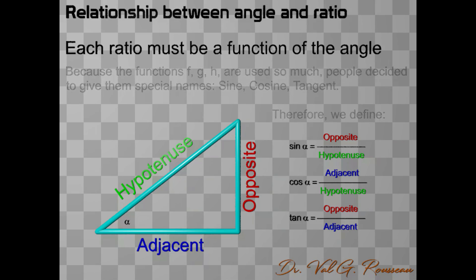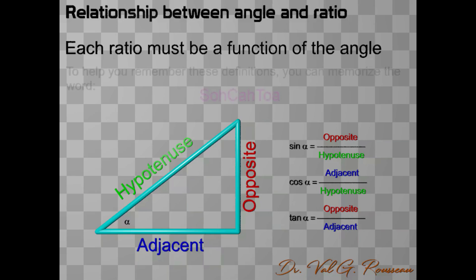You can easily remember these definitions by memorizing the word SOHCAHTOA. Sine opposite hypotenuse, cosine adjacent hypotenuse, tangent opposite adjacent.